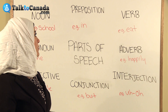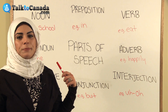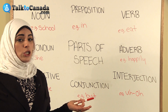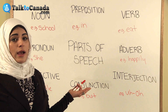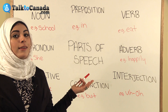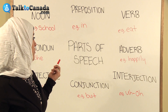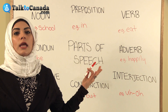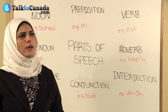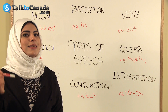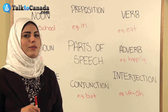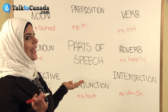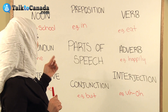Next we'll talk a little bit about a preposition. A preposition is a word that shows the relationship between a noun or a pronoun and another word. An example of a preposition is in, on, or between. I'll give you a sentence: The cookie is in the jar. Where do you think the preposition is? In.